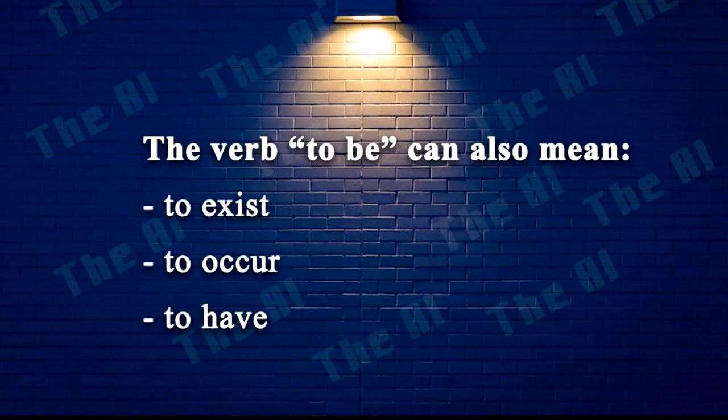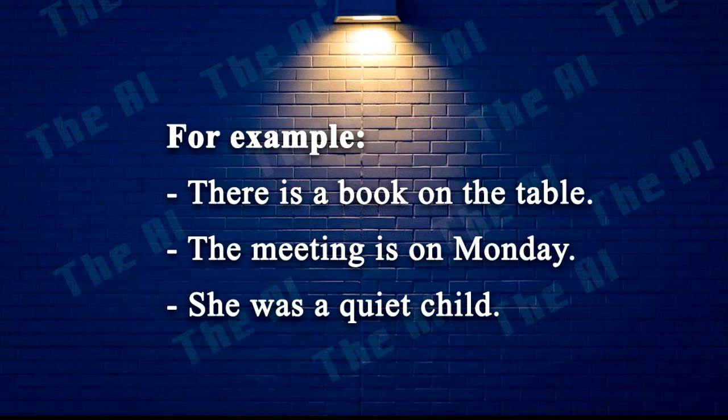The verb to be can also mean to exist, to occur, or to have the characteristics of something. For example: There is a book on the table. The meeting is on Monday. She was a quiet child.